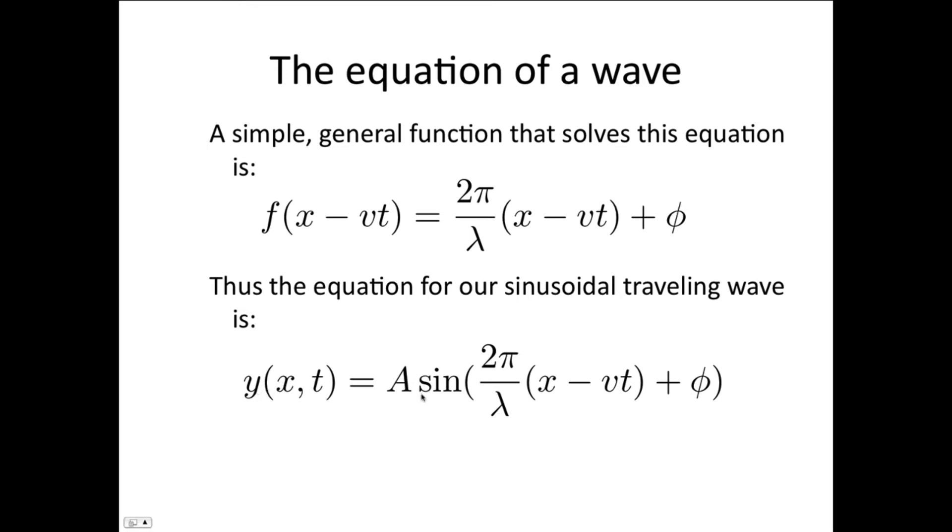And so our wave equation is going to have the form y of x and t is equal to the amplitude times sine of 2π/λ times x minus vt plus φ. So the φ is just there to make this very general, so that we can match any starting conditions.